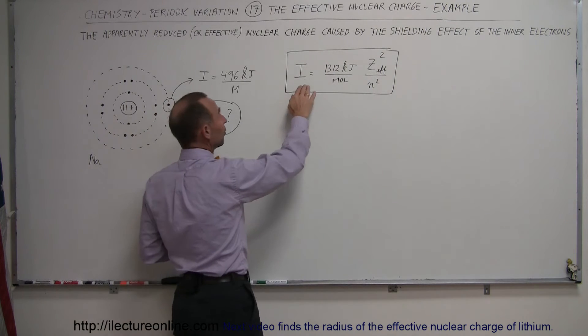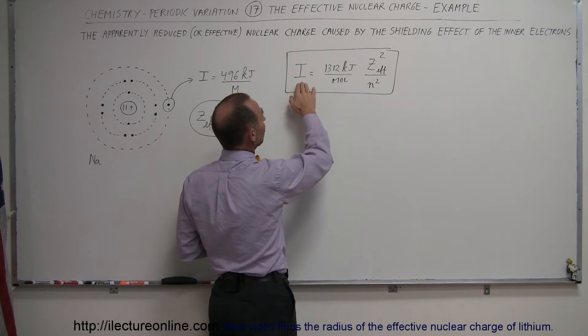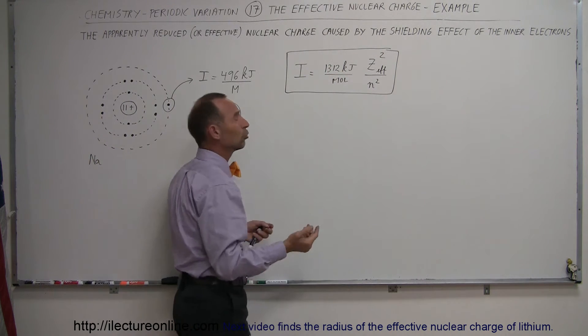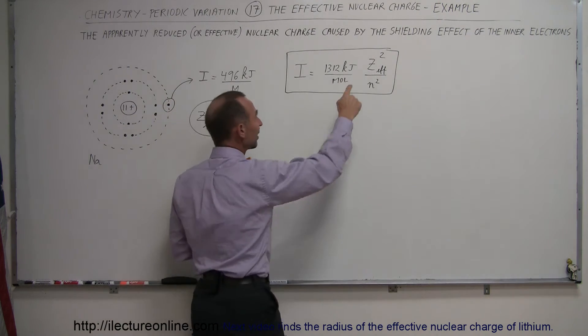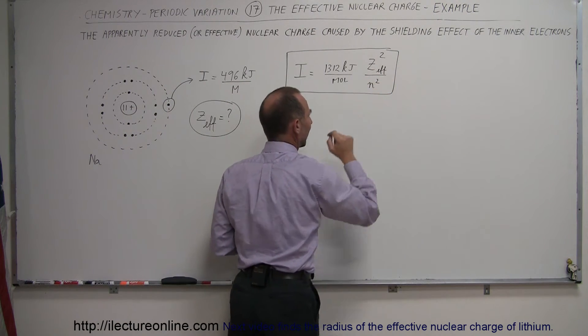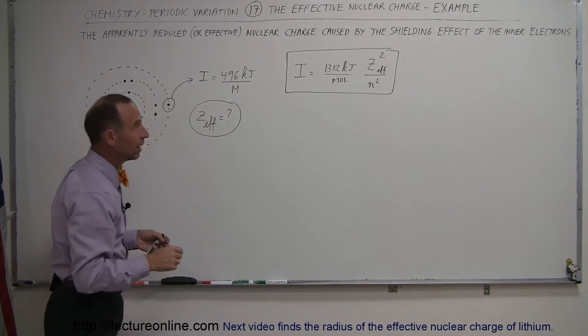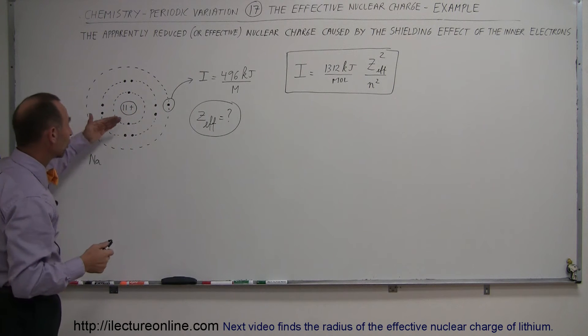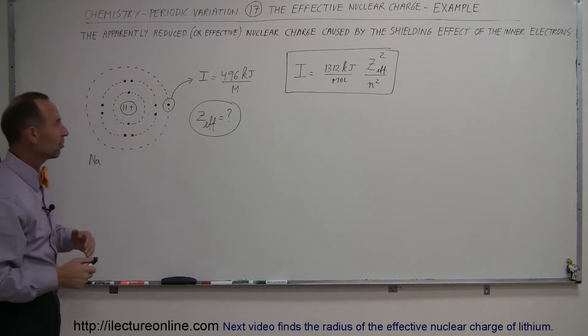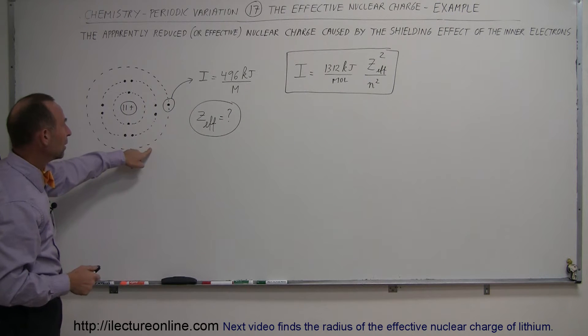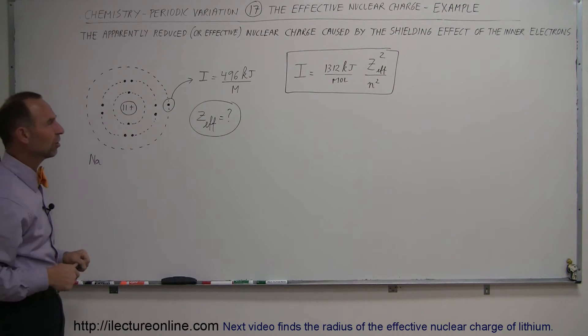So we write the equation as follows. I, the ionization energy, is equal to 1,312 kilojoules per mole times the effective nuclear charge squared divided by N-squared. N represents the principal quantum number or the energy level where the electron resides. In this case, N would be equal to 3 because it's in the third energy level.